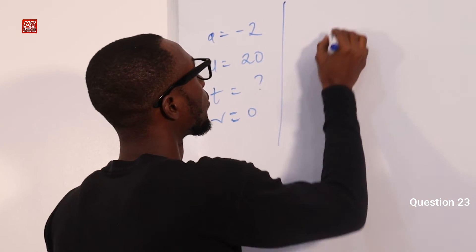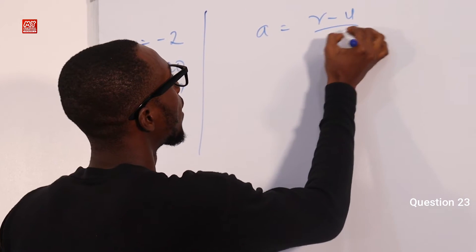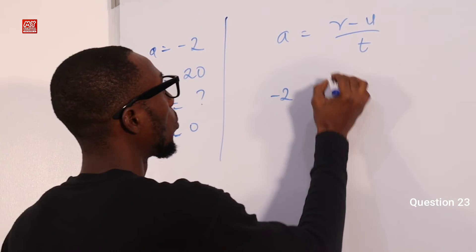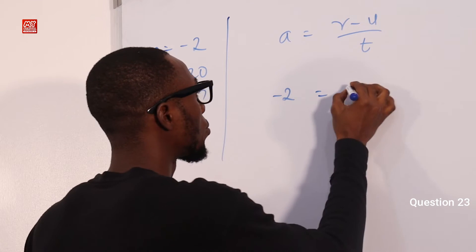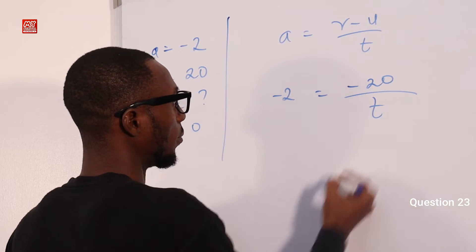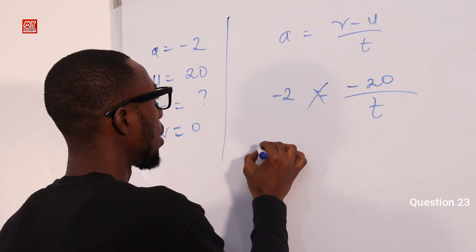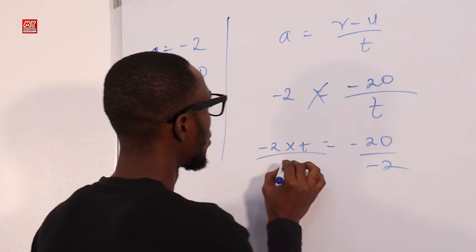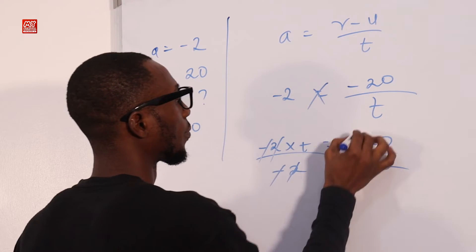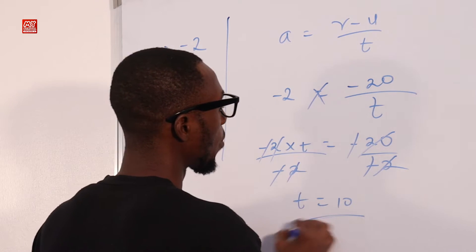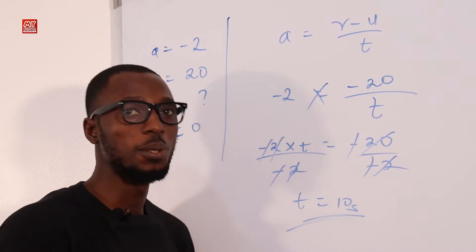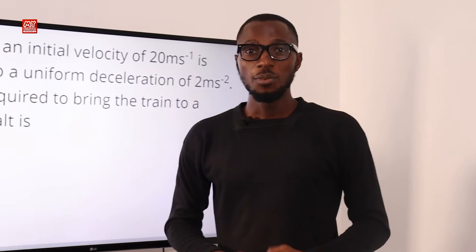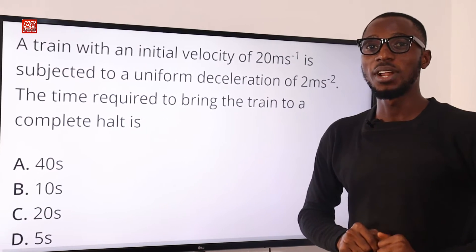Using acceleration equals v minus u over t: acceleration is minus 2, v is 0 minus 20, that is minus 20. Cross-multiplying, we have minus 2 times t equals minus 20. Dividing both sides by minus 2, the time required is 10 seconds. The correct option is option B, 10 seconds.